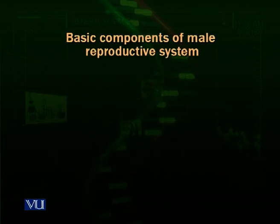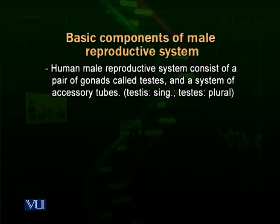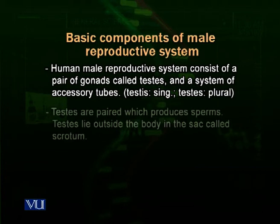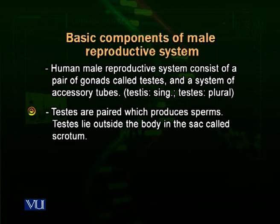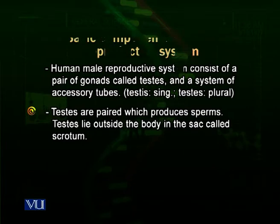Now, the basic components of the male reproductive system in human beings. The human male reproductive system consists of a pair of gonads called testis and a system of accessory tubules. Testis is singular and testes is plural. Testis are paired — two are present — and they produce sperms.